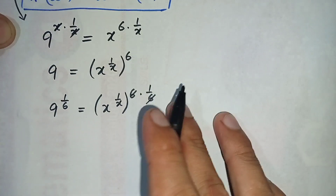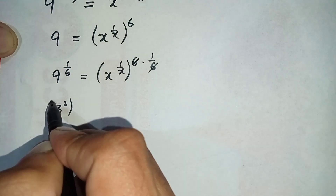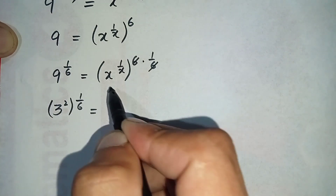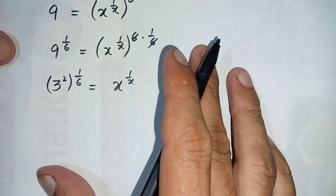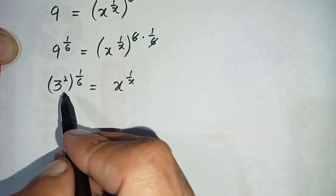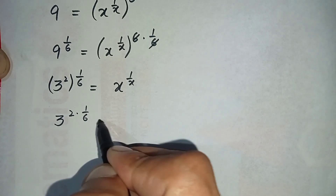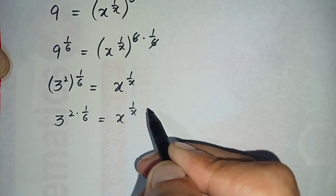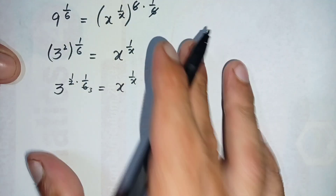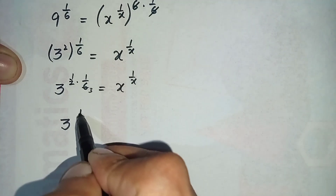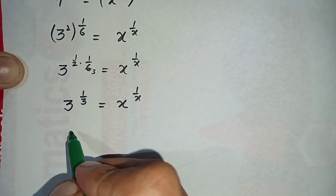The 6 and 6 cancel each other, so the power becomes 1. On the left hand side we can write 9 as 3 raised to power 2, so it becomes 3 raised to power 2 times 1 over 6. Simplifying: 2 times 1 is 2 and 2 times 3 is 6, so this becomes 3 raised to power 1 over 3, which is equal to x raised to power 1 over x.